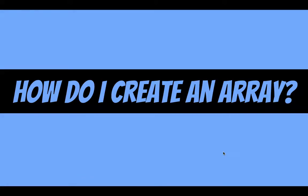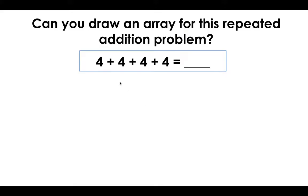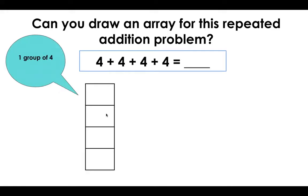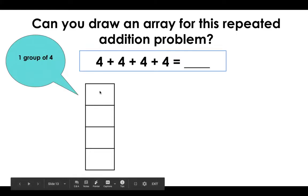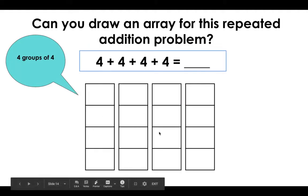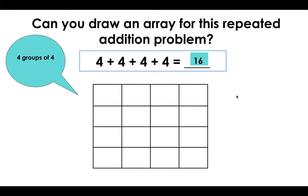How do I create an array when I look at a repeated addition problem? Let's look at this problem first: four plus four plus four plus four. We need to start by drawing our array with cubes today. I have my first cube here — I need four, so I have one group of four. But I don't just need one group of four; I need four groups of four. I have four plus four plus four plus four, which gives me this array that shows four groups of four, and I know that equals sixteen.